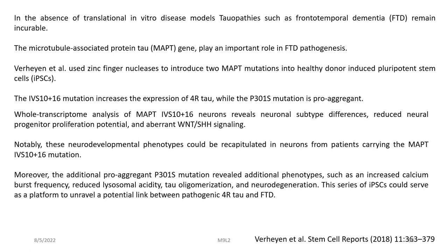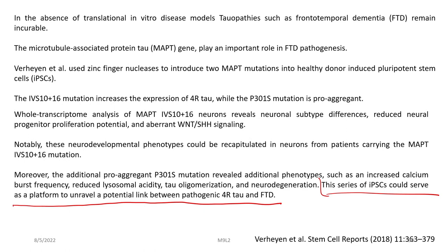Notably, these neurodevelopmental phenotypes could be recapitulated in neurons from patients carrying the MAPT mutation. Moreover, the additional pro-aggregate P301S mutation revealed additional phenotypes such as increased calcium burst frequency, reduced lysosomal activity, tau oligomerization and neurodegeneration. This series of iPSCs could serve as a platform to unravel a potential link between pathogenic 4R tau and FTD — an important development for a disease which is incurable as of now.